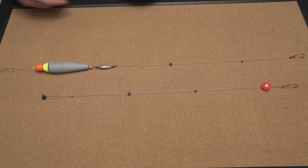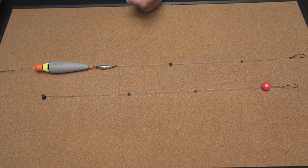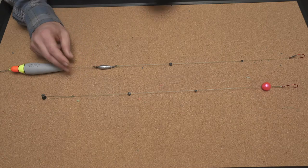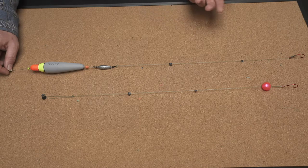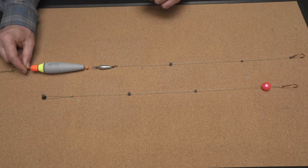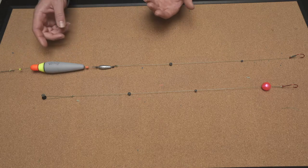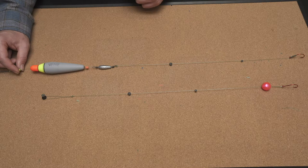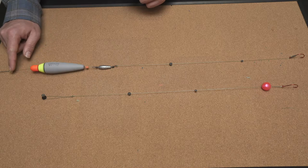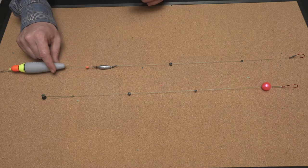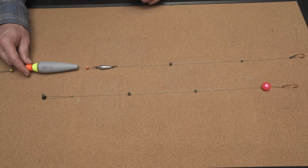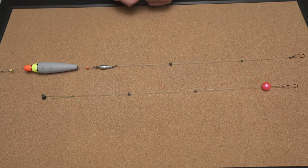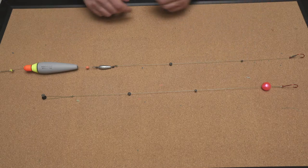As far as the actual rigging goes, we start with a thread bobber stop tied onto the main line. This is going to control your depth. The float slides up and down on the line, and it's going to slide up against that stop. So you're going to set that stop to the depth that you're trying to target. Below the bobber stop, we have what's called the bobber stop bead. Most of your floats that you can buy commercially are going to come with a bead just for this purpose. The most important thing is that they have a real small diameter hole in the middle, specifically so that they don't go up and over the stop. Below the bead is the float. In this case, it's a one ounce arrow float.